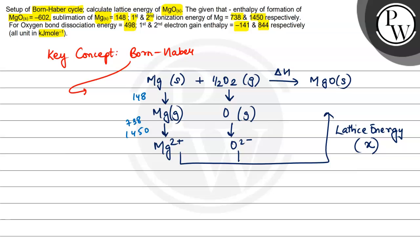Then we have bond dissociation energy which is 498. But because it's half, we will use half of 498. And then there are two electron gain enthalpies that will be used: minus 141 and 844.